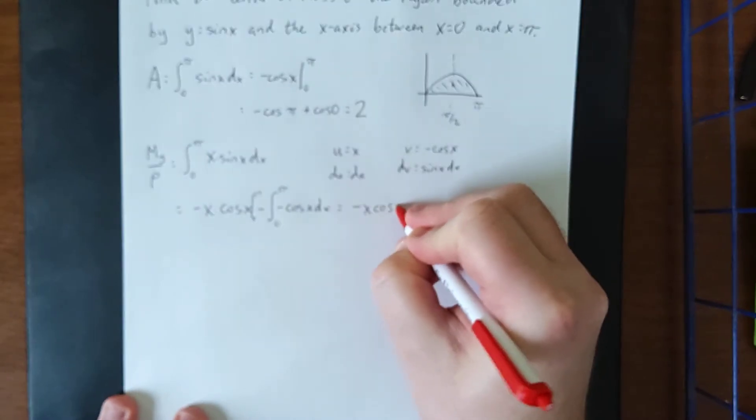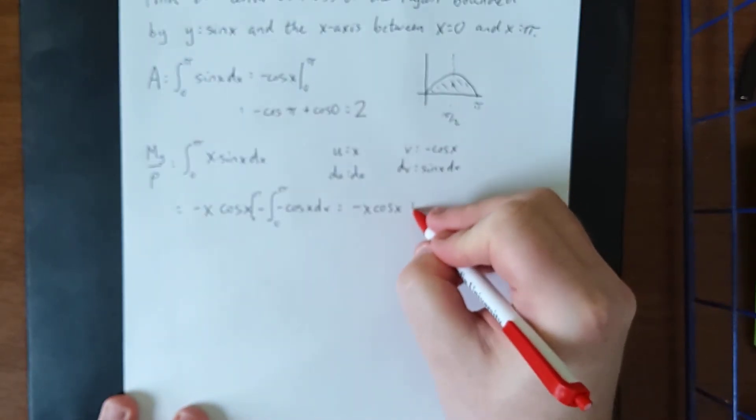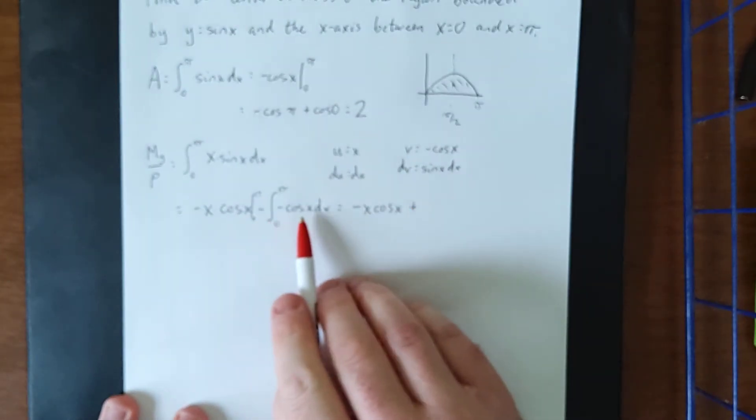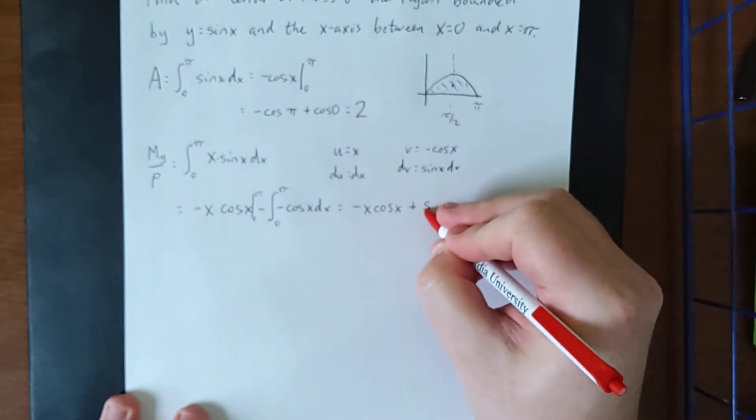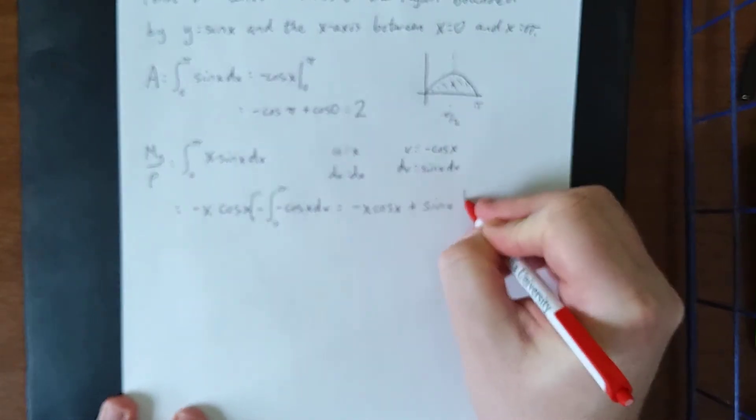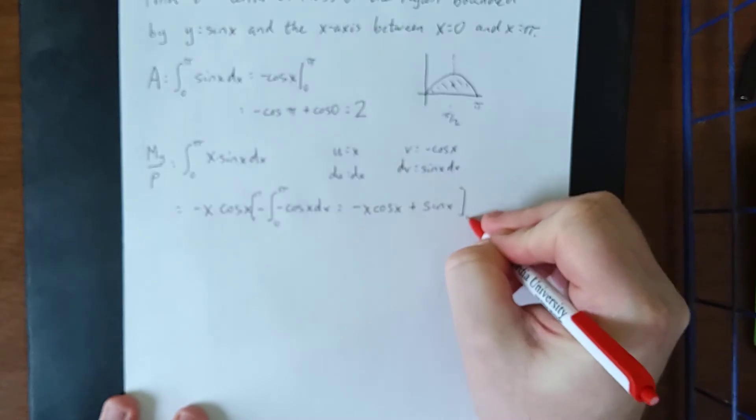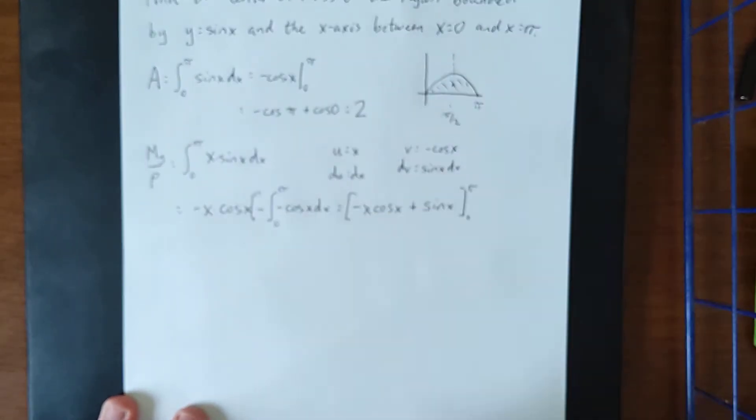Negative x cosine of x. This will be plus the integral of the cosine of x. The integral of the cosine of x is going to be the sine of x. And this will be going from lower bound zero to upper bound pi.